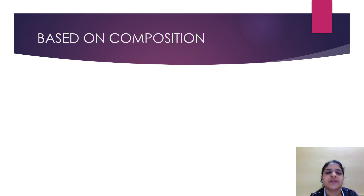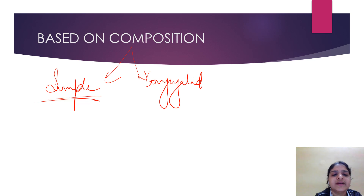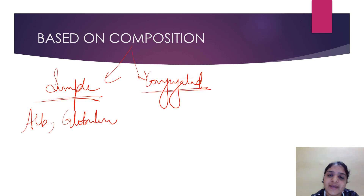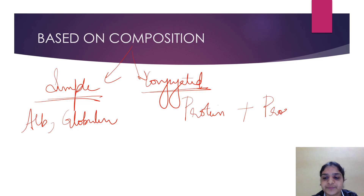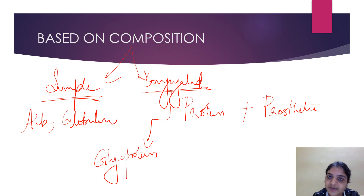Based on composition, proteins can be divided into two types: simple proteins and conjugated proteins. Simple proteins contain only amino acids — examples are albumin and globulin. Conjugated proteins contain a protein part and a non-protein part called the prosthetic group. Conjugated proteins can be glycoproteins, containing a carbohydrate as the non-protein part.